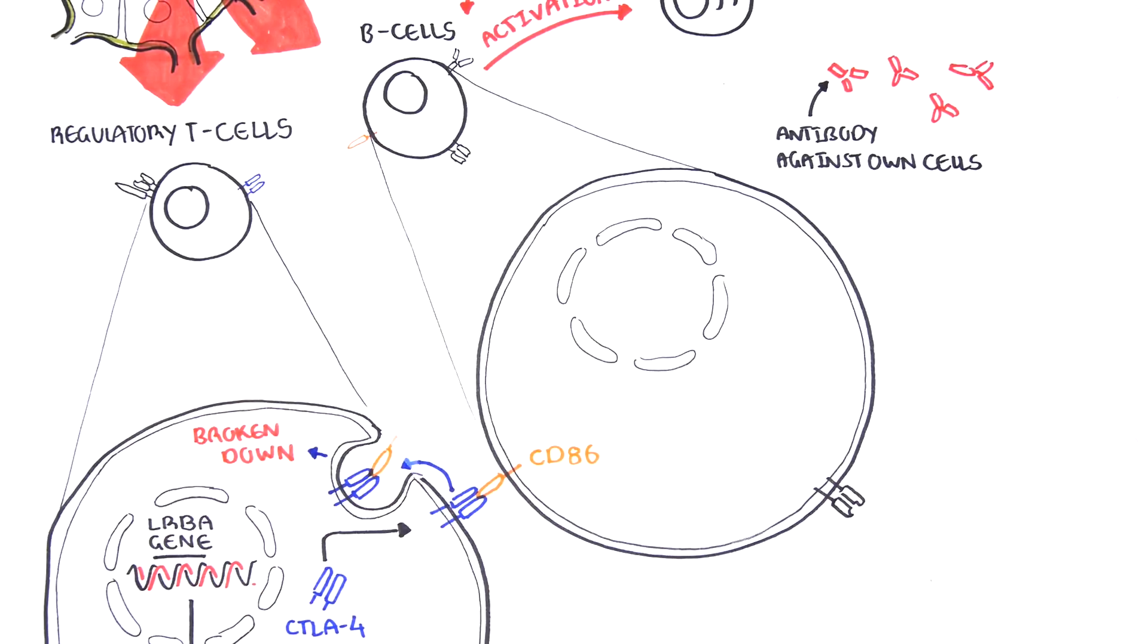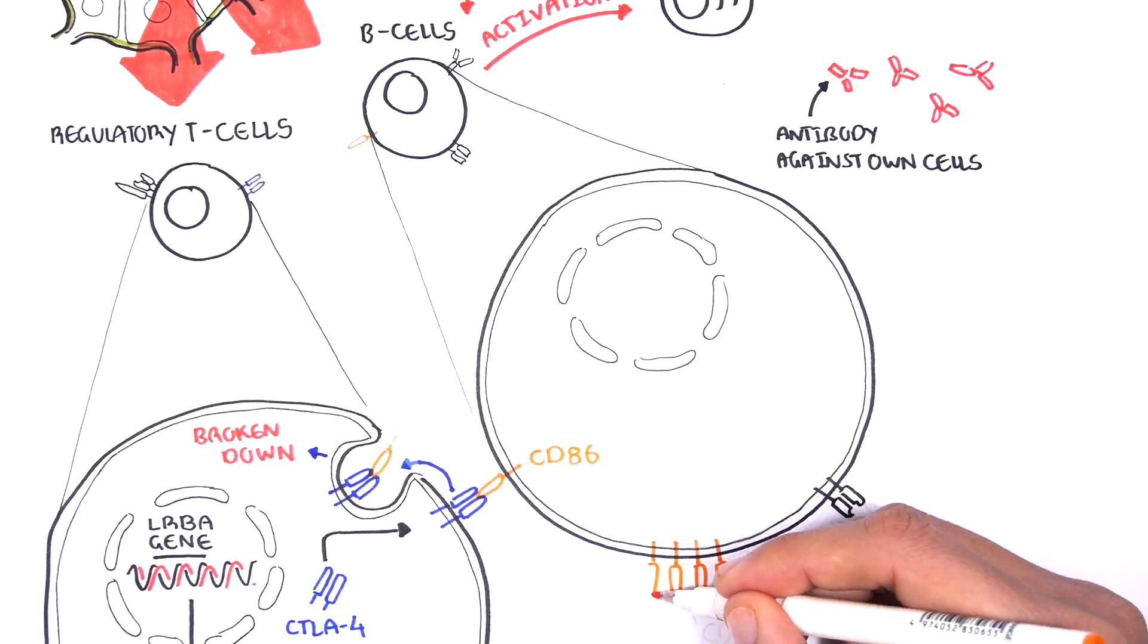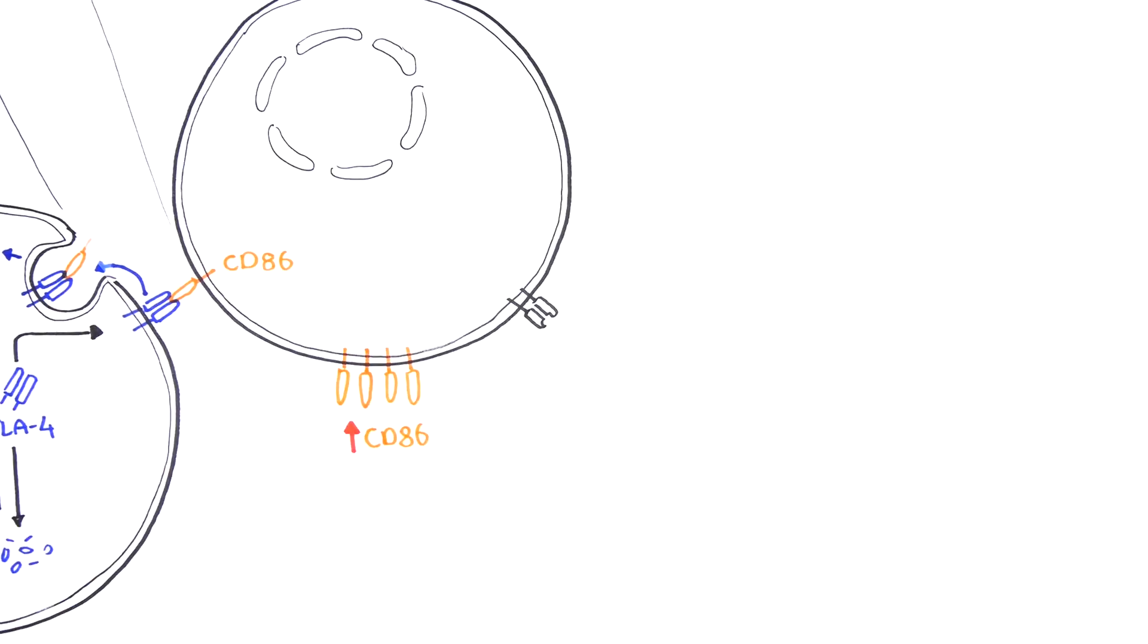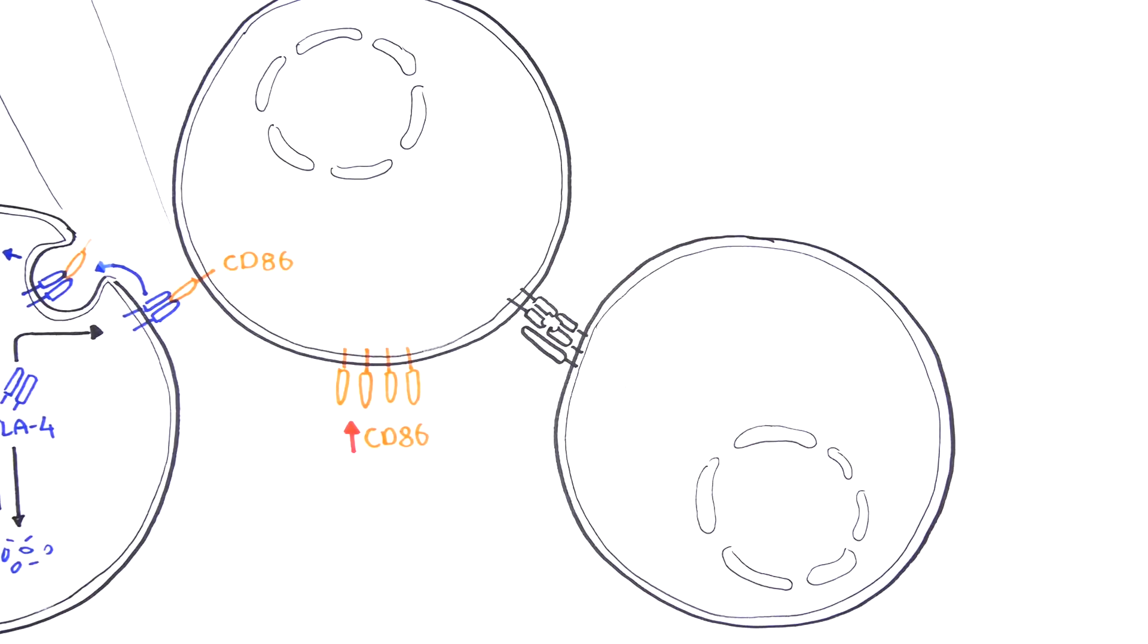CD86 is normally a switch that turns on the immune response. A lot of CD86 signals helper T cells to activate these B cells, which then causes the activated B cells to divide and produce antibodies.